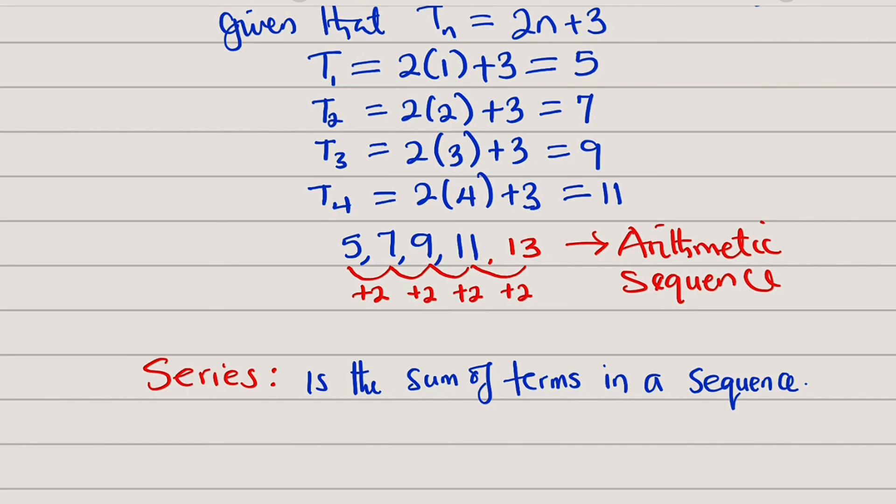But what is series? It is the sum of terms in a sequence. So, if like now you want to add the first 3 terms, you say 5 plus 7 plus 9, which is equal to 21. That is said to be a series.